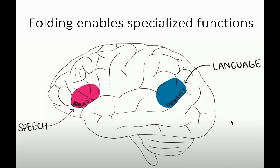As brain capacity increased, so did the folding of our cerebral cortex. That folding enables greater specialization of functions — different regions can be dedicated to particular aspects of intelligence. For example, we have a region towards the back of the brain that helps process language, and a separate area for processing speech. All parts of the brain are involved in multiple functions, but these areas of general specialization increase our cognitive abilities.